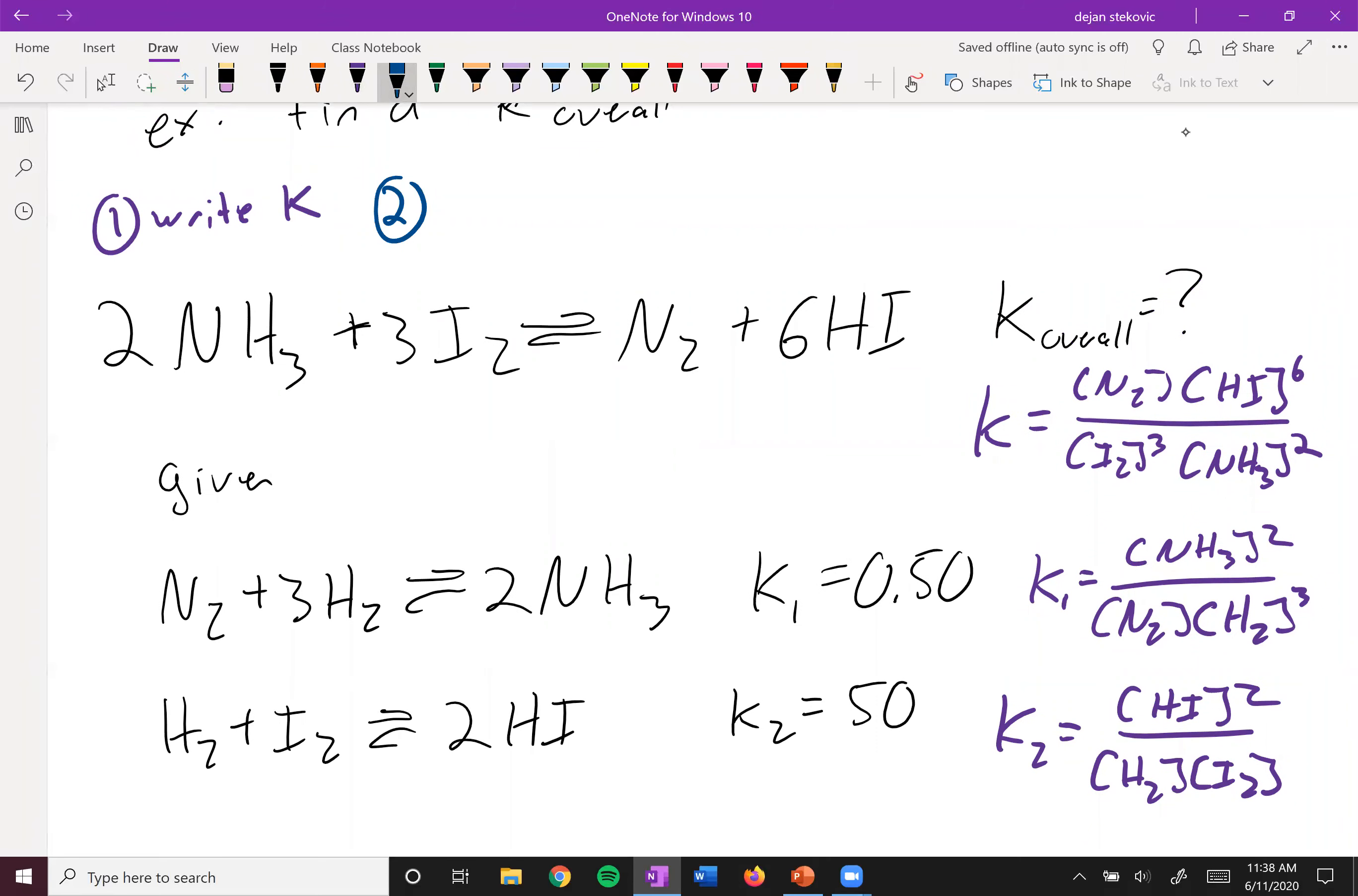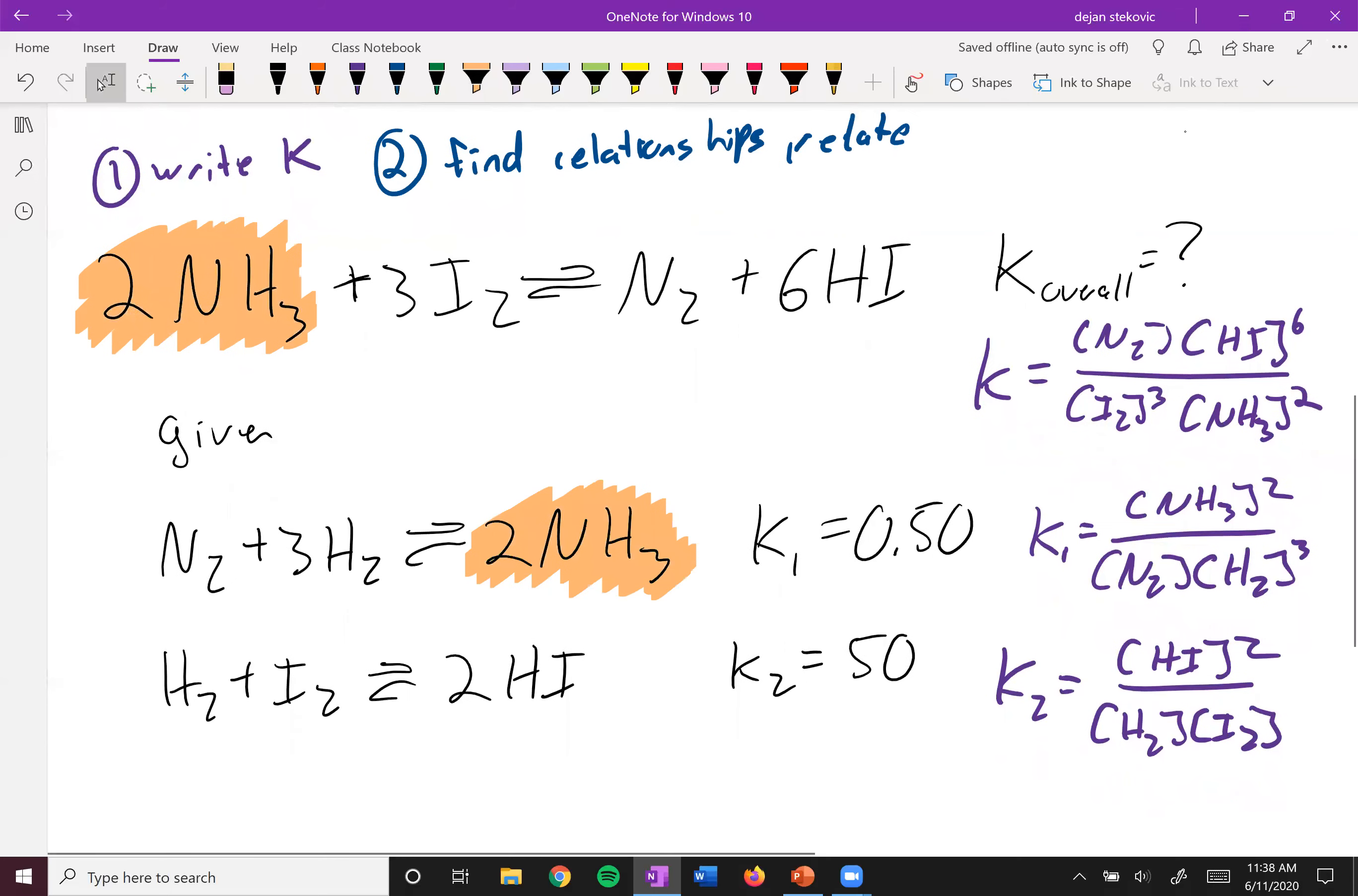The second thing you want to do is you want to find relationships and relate the two. And so the way I do this is I always start left to right. So I take a look at what I want to know. And I see the first thing I have is 2NH3. And then I look into my givens and then I find where NH3 is given. And so in this case, it is given only on this right side. If you see it in multiple equations, just ignore it and go to the next thing in your equation. And then hopefully it'll resolve itself. But anyways, back to this thing.